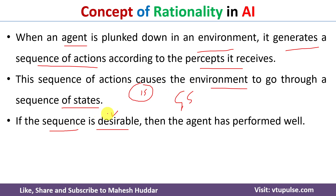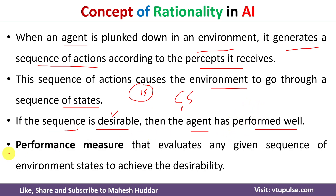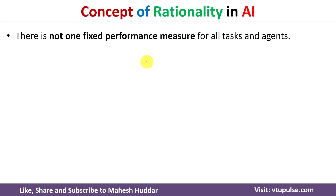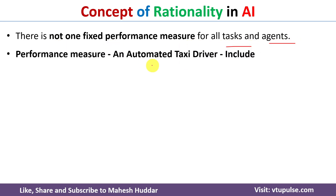If the sequence of states is desirable, then you can say that the agent has performed well. If the sequence of actions generated by the agent was not desirable, then we can say the agent has not performed well. To determine whether the agent has performed well or not, we need what is called the performance measure — going from the initial state to the goal state, what path it followed, whether that path is optimal. The performance measure is not fixed for all tasks and agents in artificial intelligence.